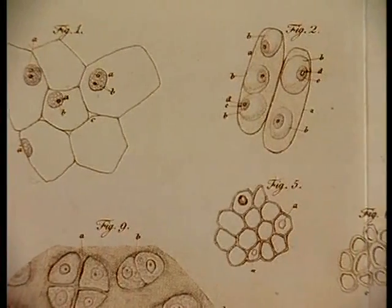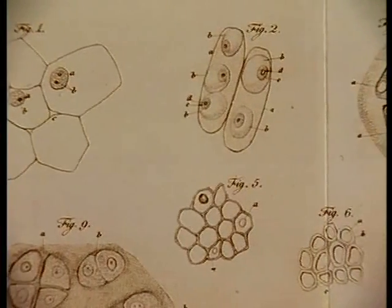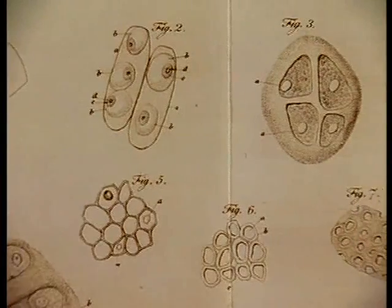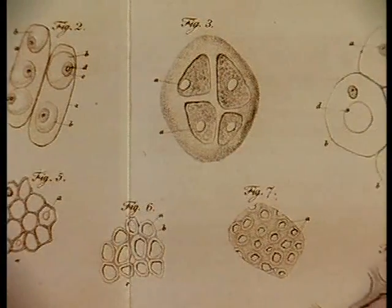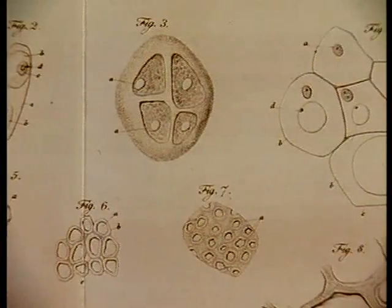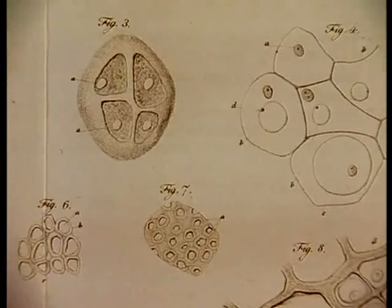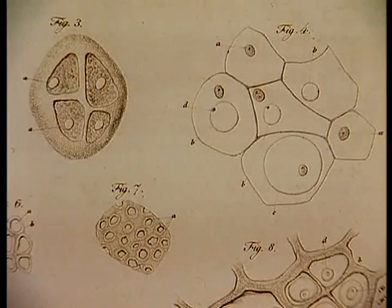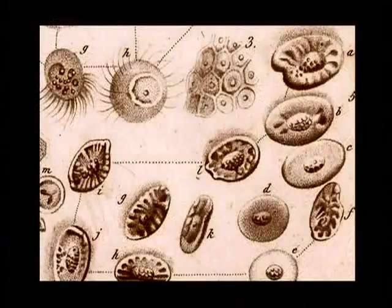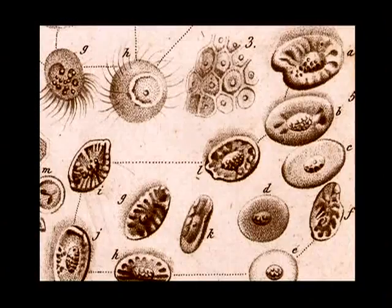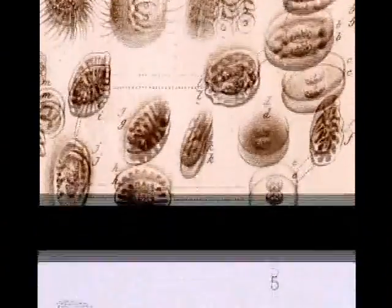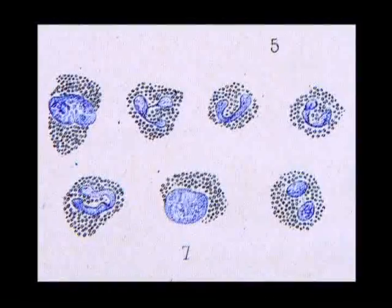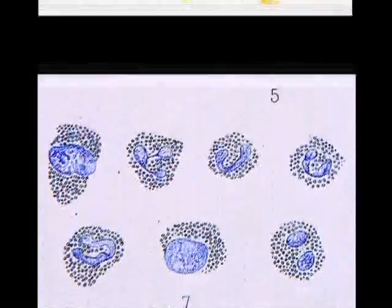The cell membrane took some time to gain the respect it deserved. In 1870, it was stated that the membrane belonged so little to the cell that it might even be considered a sign of degradation. It was only at the end of the 19th century that it was recognized as an envelope vital to the cell's survival.